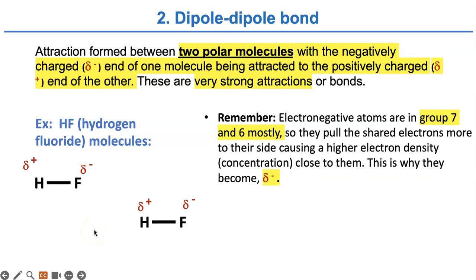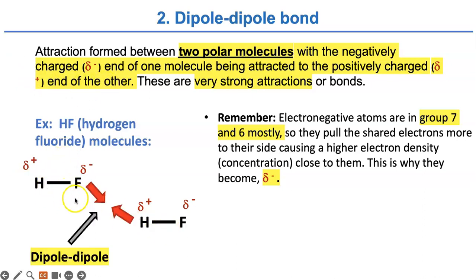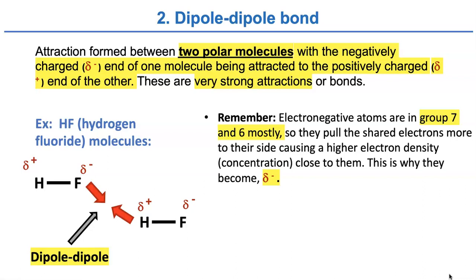The second type is dipole-dipole bonds or interactions. These attractions are formed between two polar molecules, meaning they have a negatively charged delta-minus end being attracted to the positively charged delta-plus end of the other, like in hydrogen fluoride molecules. They are mutually attracted to each other — the plus end and the minus end come closer together, which we call a dipole-dipole interaction. These are very strong interactions, stronger than LDFs, but not the strongest. Electronegative atoms are in groups 7 and 6 mostly, and they pull shared electrons more to their side, causing high electron density — this is why they become delta-minus. Fluorine is the most electronegative of all.